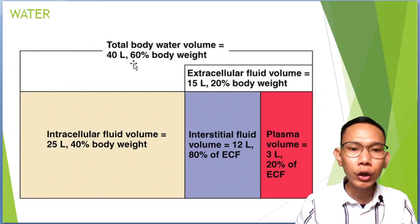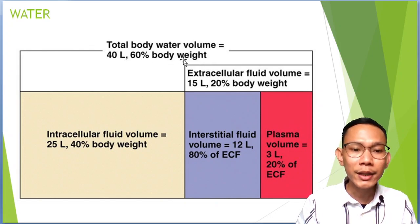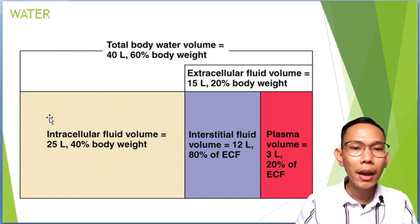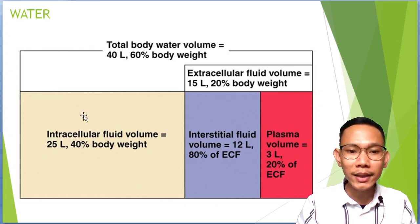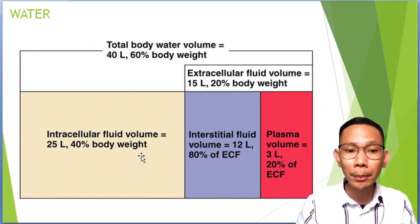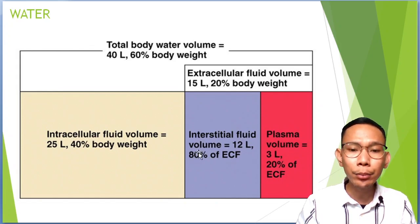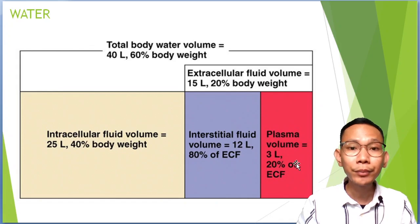Your total body water volume is approximately 60% of the body weight, depending on the gender and the physical attributes of the patient. It is further subdivided into intracellular fluid volume and extracellular fluid volume. Intracellular means the fluid is inside the cells; extracellular means outside the cells. Intracellular is approximately 40% of the body weight or around 25 liters. Your extracellular fluid volume is further subdivided into two: it could be your interstitial fluid or within your plasma volume.